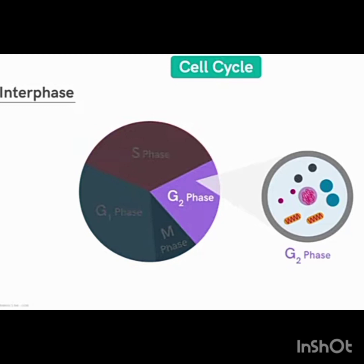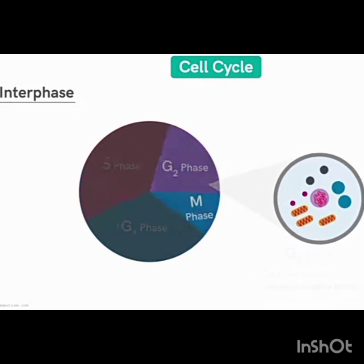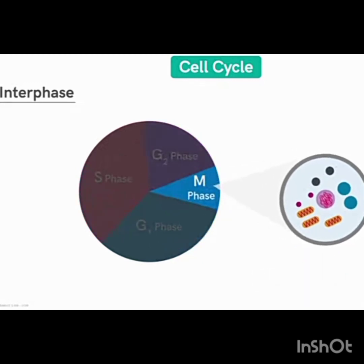After S phase, the cell enters G2 phase. G2 phase is a cell growing phase again — the cell grows more and prepares itself for the next stage, which is M phase, the mitotic division phase.